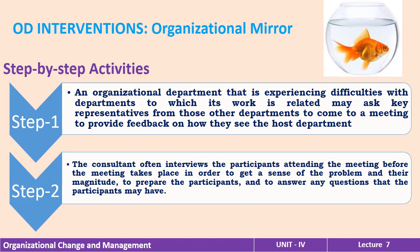The step-by-step intervention activities are as follows. In step one, an organizational department that is experiencing difficulties with departments to which its work is related may ask key representatives from those other departments to come to a meeting to provide feedback on how they see the host department.